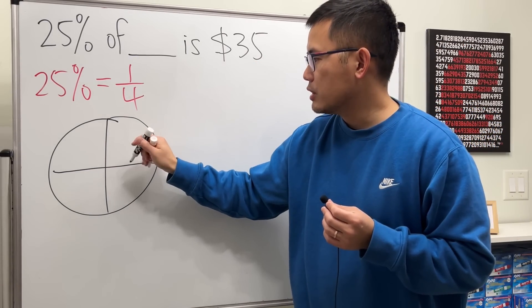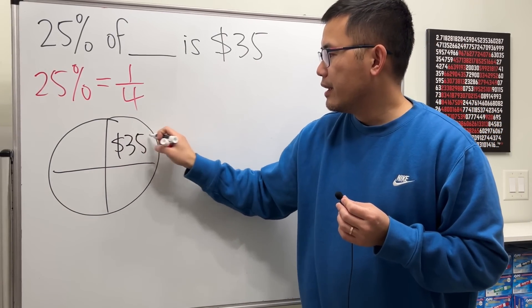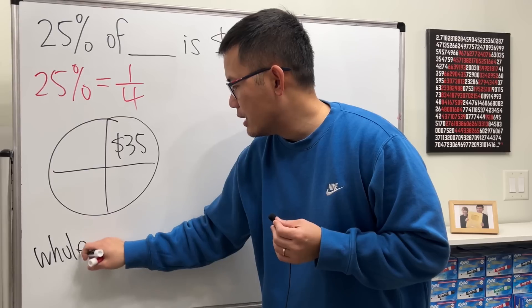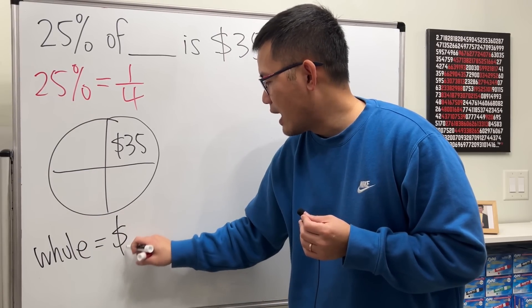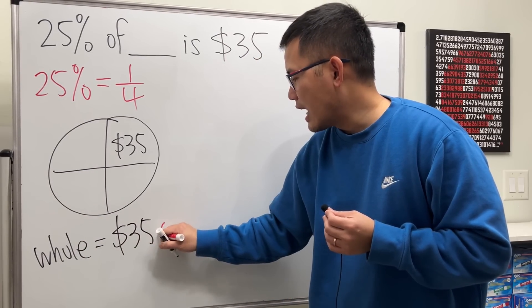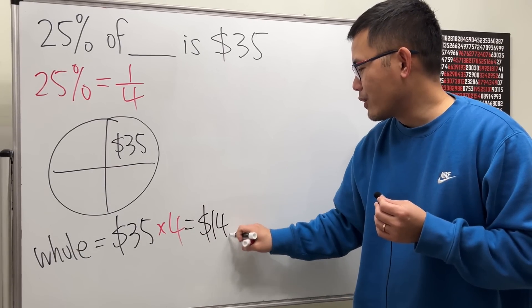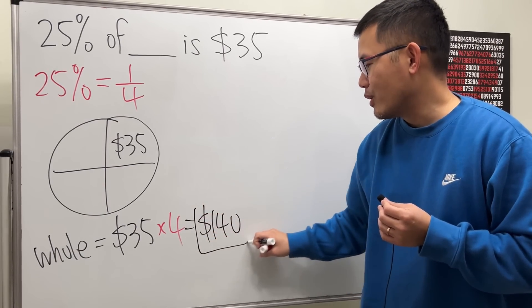So let me just put $35 right here, and the question is what's the whole thing? The whole thing is just $35 times four of them, and you end up with $140, and that will be it.